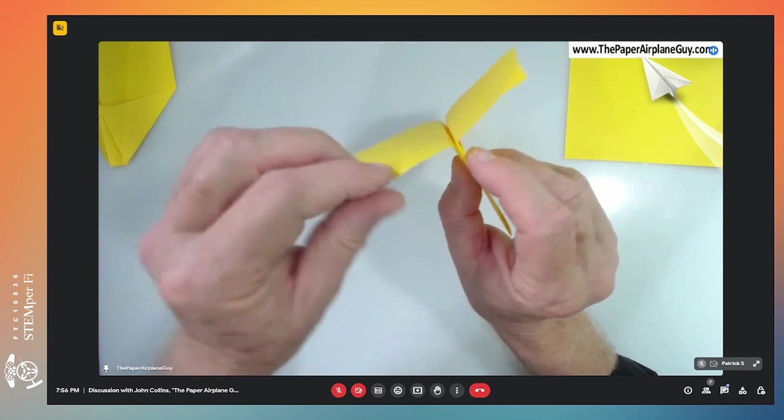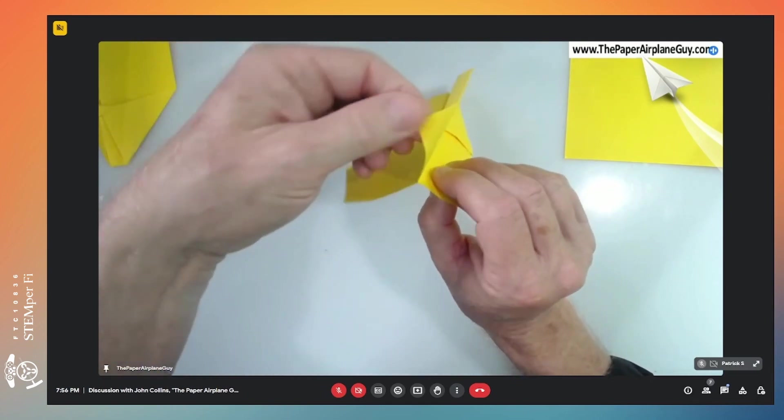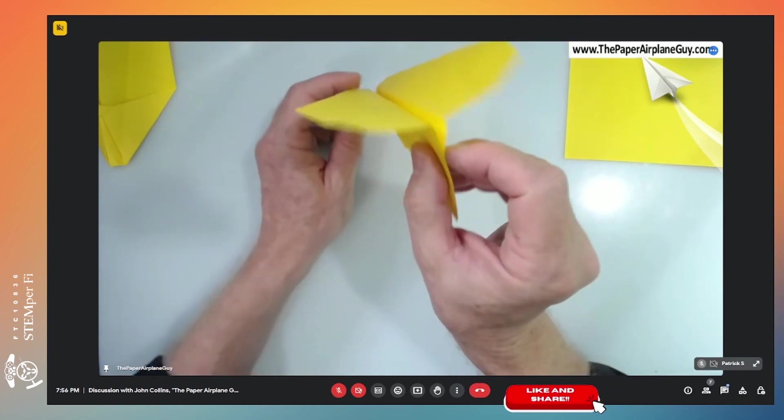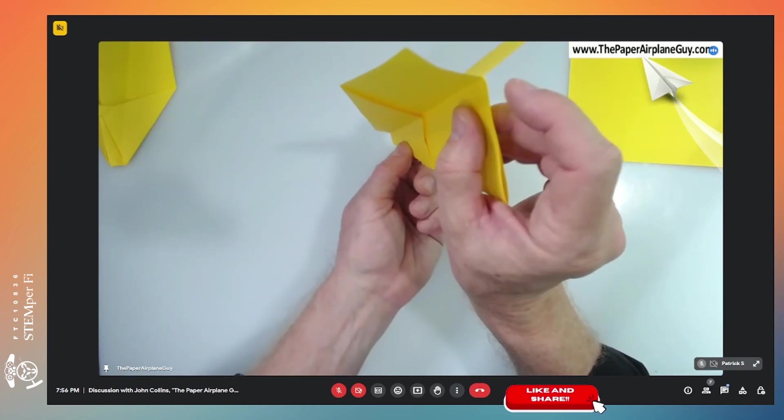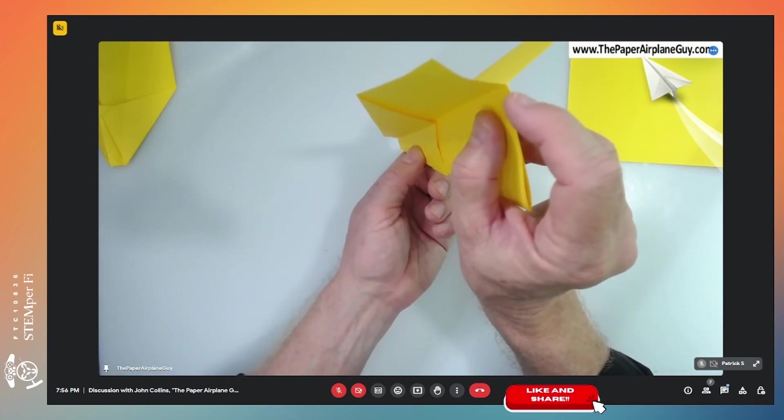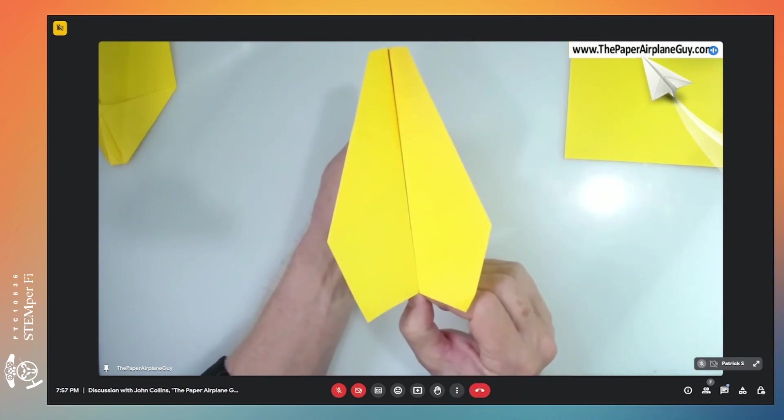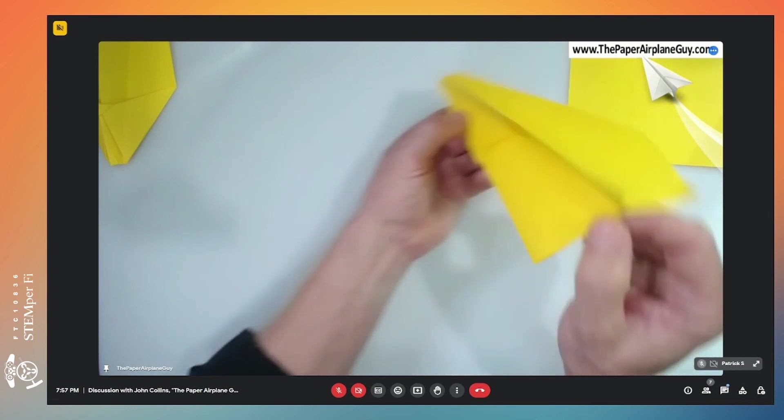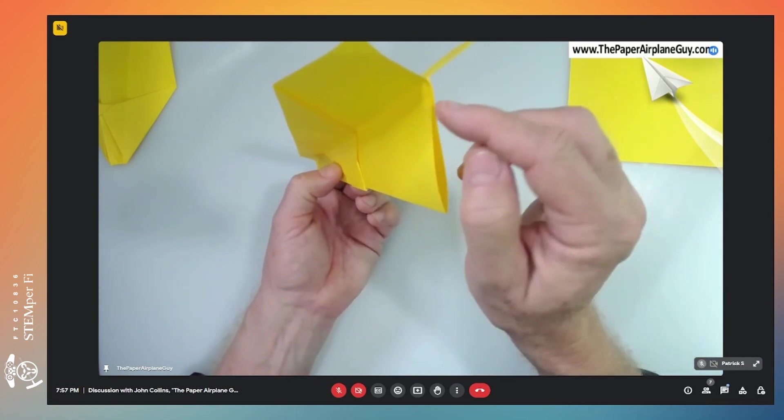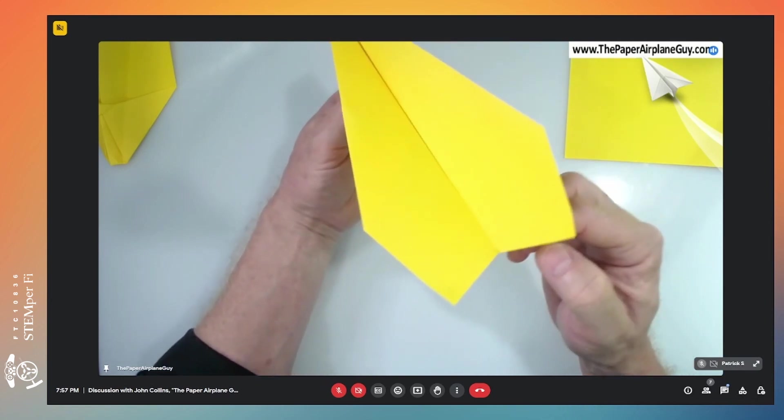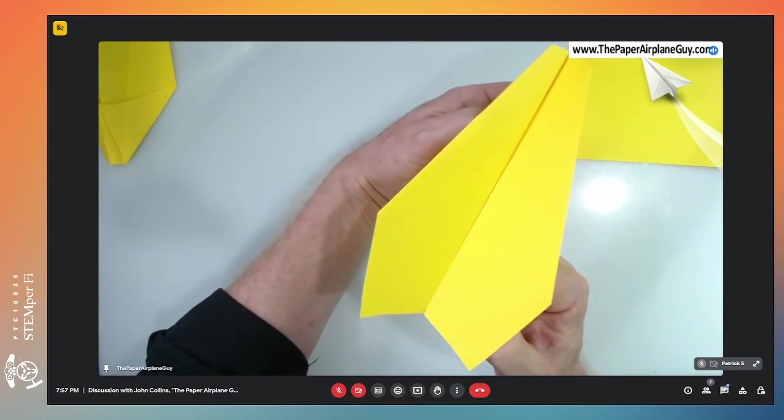Same thing with right and left. When you fold a plane and throw it, it's probably going to turn right or left. So what you want to do to correct that is make an adjustment right here where the body of the plane connects to the wings. Let's say I want to get my plane to turn to the right. I would make a bend to the right and just like up and down elevator, air will hit that, push the tail to the left, and that moves the nose to the right.